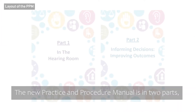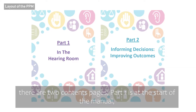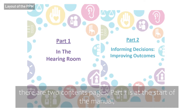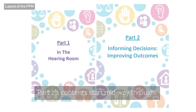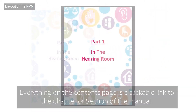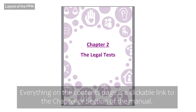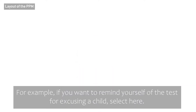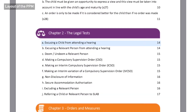The new Practice and Procedure Manual is in two parts. There are two contents pages: Part 1 is at the start of the manual, and Part 2's contents start midway through. Everything on the contents page is a clickable link to the chapter or section of the manual. For example, if you want to remind yourself of the test for excusing a child, select here.